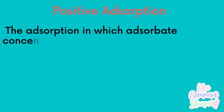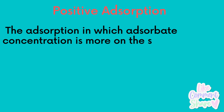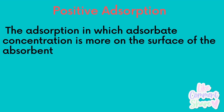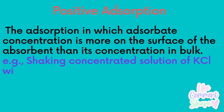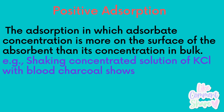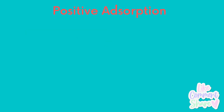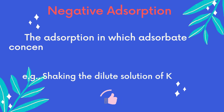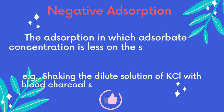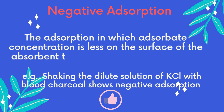Then comes positive adsorption. Positive adsorption is when the adsorbate concentration is more on the surface of the adsorbent than its concentration in the bulk. For example, shaking a concentrated solution of potassium chloride with black charcoal shows positive adsorption. On the other hand, negative adsorption is when the adsorbate concentration is less on the surface of the adsorbent than its concentration in the bulk.